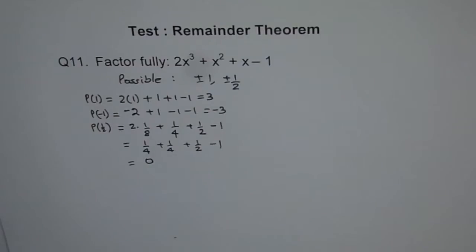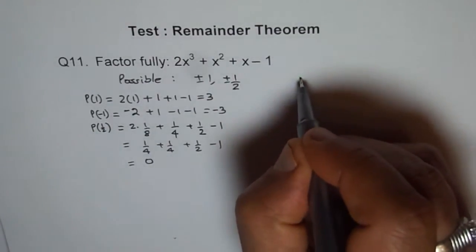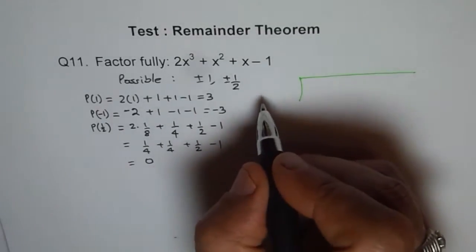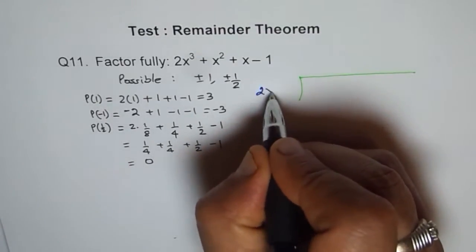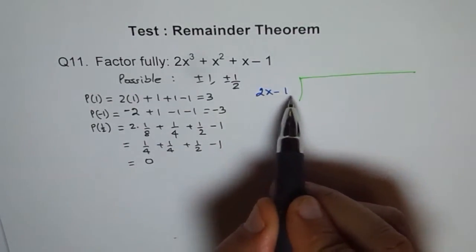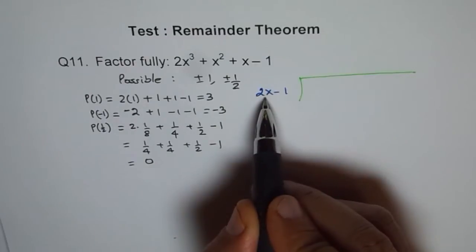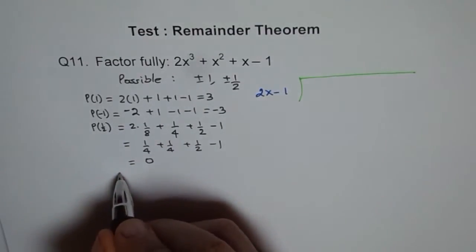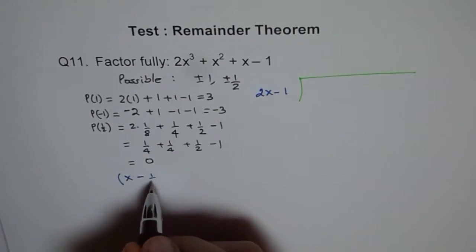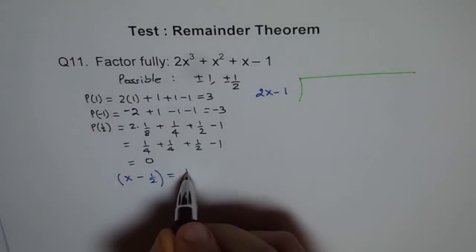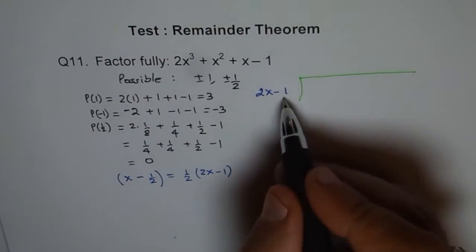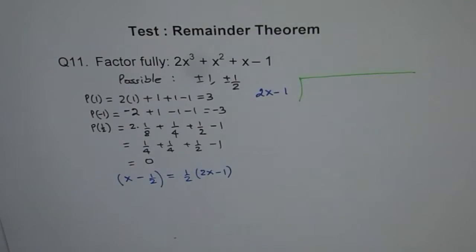So P(1/2), that means 2x - 1. Do you see? 2x - 1 is the factor, because this will become 0 when x is 1/2. So 2x - 1 will give, but we want x - 1/2. So basically, x minus 1/2 will give us the answer, which I could write as 1/2 of 2x - 1. So we'll forget about this 1/2 and write 2x - 1 as our factor.